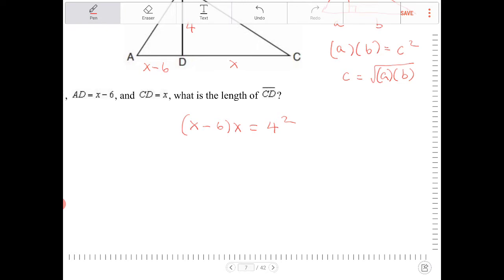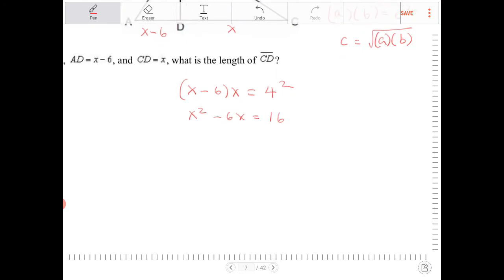I'm going to distribute the X, and we'll end up with X squared minus 6X is equal to 16. This turns into a quadratic equation, so I'm going to subtract both sides by 16.